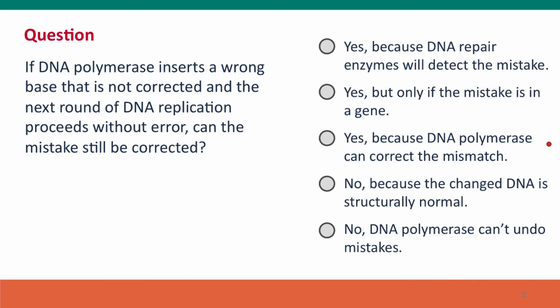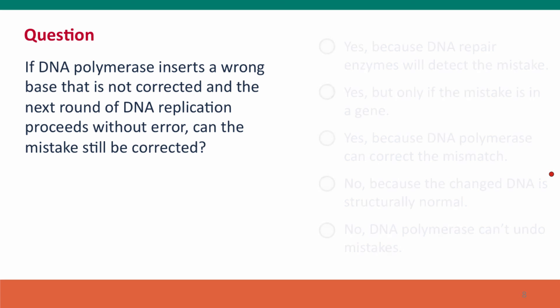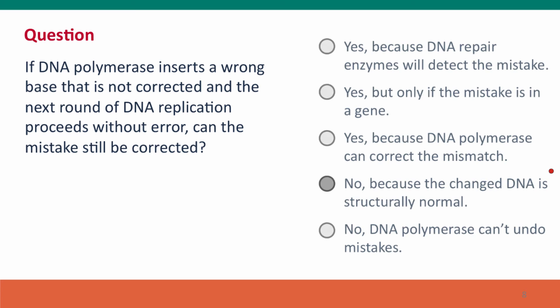Here's a question: if DNA polymerase inserts a wrong base that isn't corrected by proofreading or mismatch repair, and then the DNA gets replicated again when the cell next divides, can the mistake still be corrected? The answer is no. Because the changed DNA is now structurally normal, there's no process in the cell that can detect that it's changed from what it used to be — it's now a mutation.